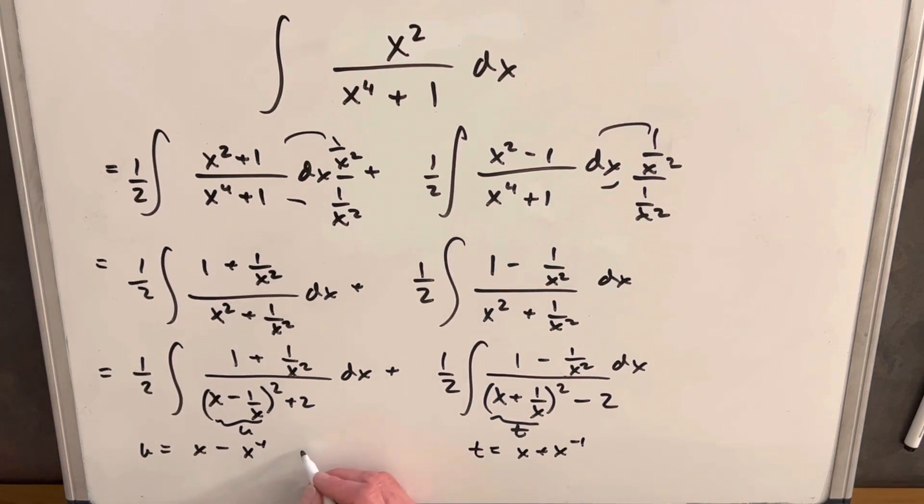Over here, we're going to have x plus x to the negative 1. Then when we take our derivative on the left, our du, derivative of x is 1. Derivative here by power rule is going to be plus x to the minus 2. And that's going to be exactly this up here, because this can be written as 1 over x squared.